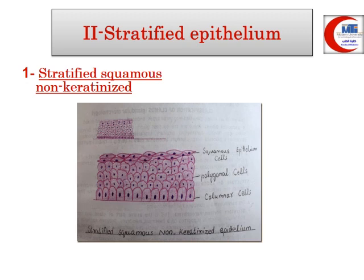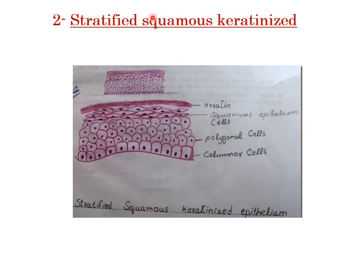Stratified squamous non-keratinized epithelium lines tracts or tubes opening to the surface, such as the oral cavity. Stratified squamous keratinized epithelium is similar but its top squamous cells accumulate the protein keratin and lose their nuclei, forming a keratin layer. This provides more protection and is present in the epidermis of the skin.